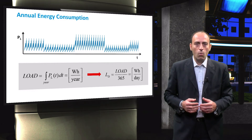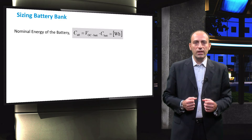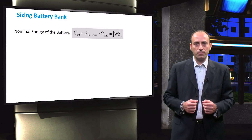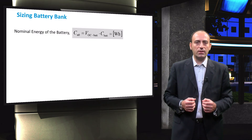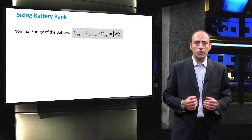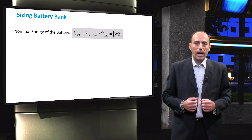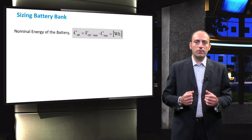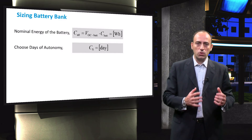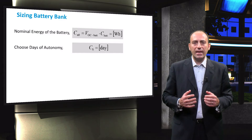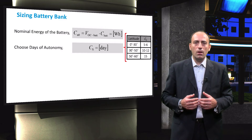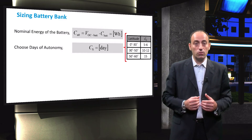The average daily demand is obtained by dividing the annual energy demand of the loads by 365 days and is expressed in watt-hours per day. Once the daily load demand is calculated, a particular battery is chosen for the PV system from the market. Its rated energy capacity, CN0, is noted by multiplying its open circuit voltage and its rated capacity. After this, an adequate number of autonomous days, CS, is chosen. As you saw in the video about loss of load probability, this selection can be made using the following table as a guideline. For example, places close to the equator can have fewer autonomous days.